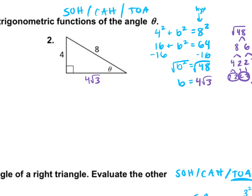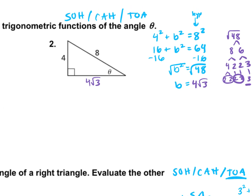It helps to label everything. Theta is down here, so the opposite side is 4. The adjacent side is 4 square root 3, and the hypotenuse is 8.